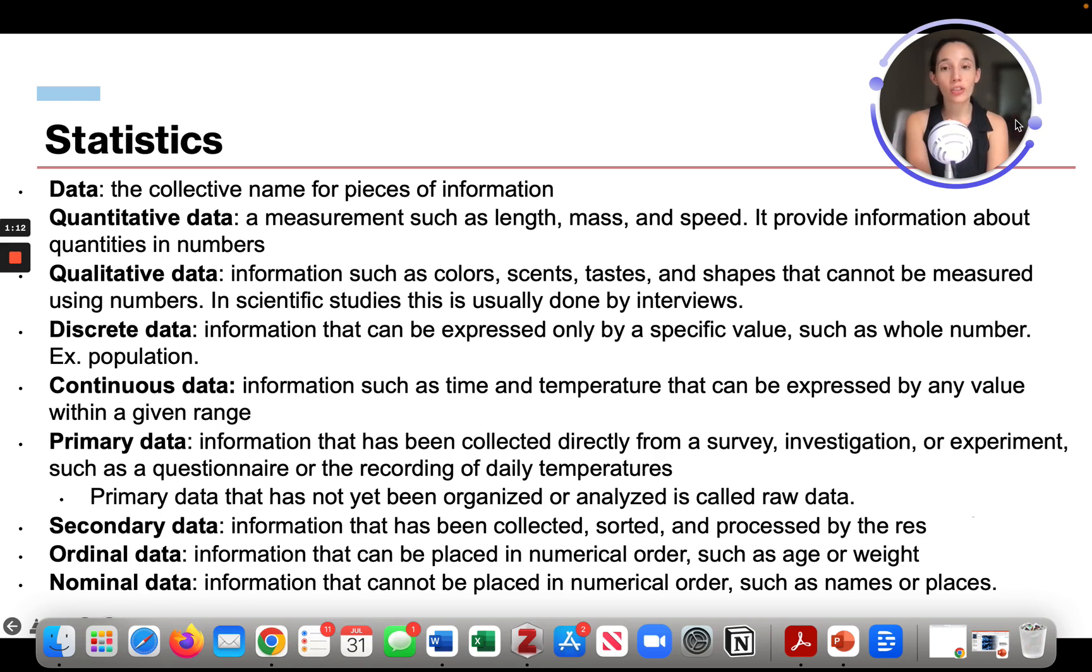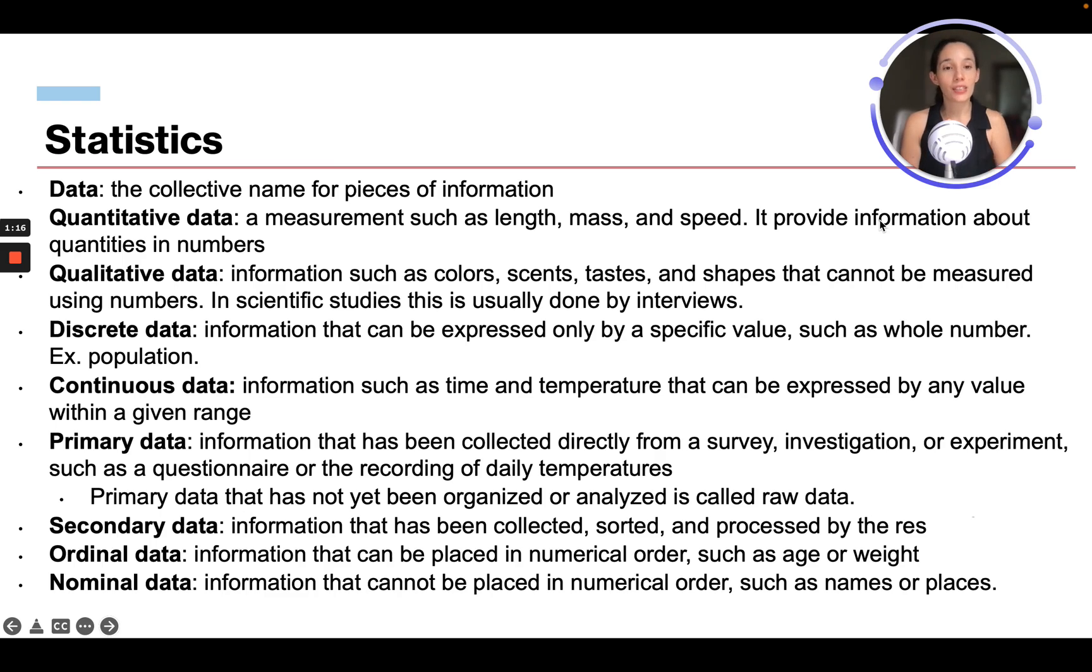Primary data is information that has been collected directly from a survey, investigation, or experiment, such as a questionnaire or the recording of daily temperatures. Primary data that has not yet been organized or analyzed is called raw data.